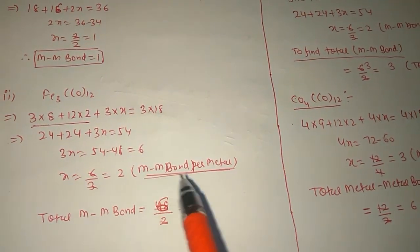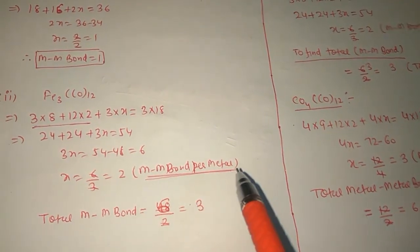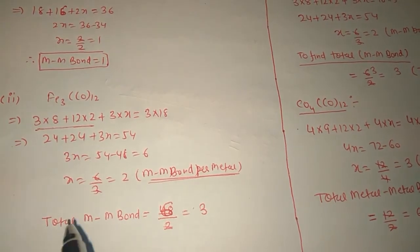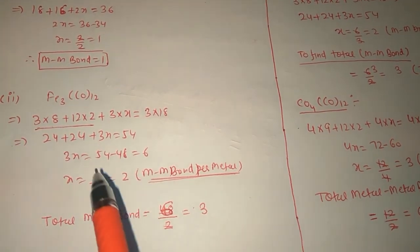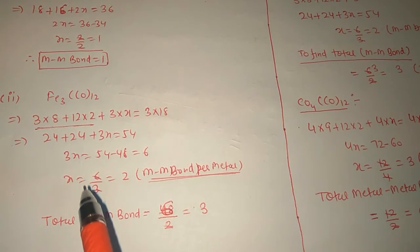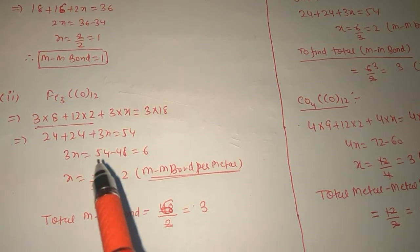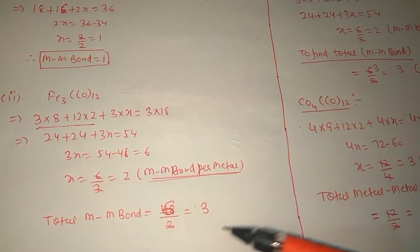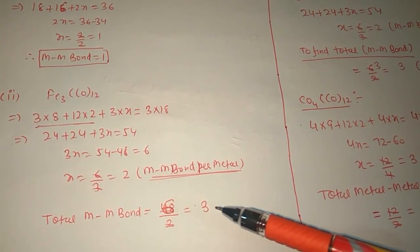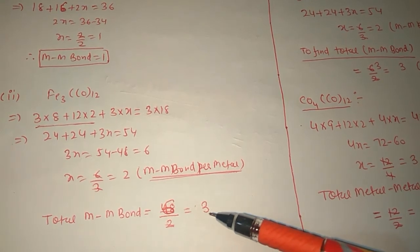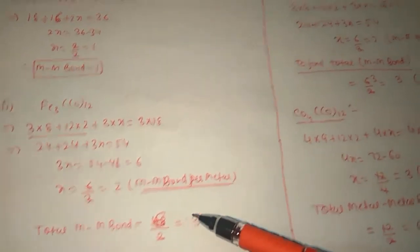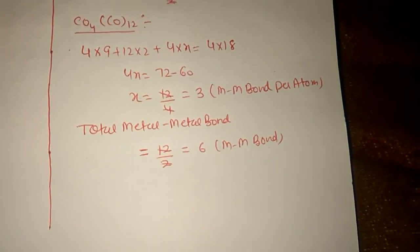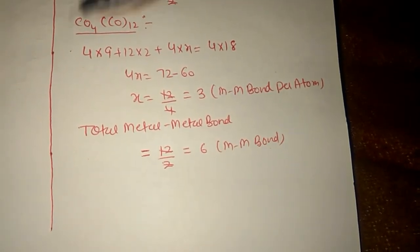To find the total number of metal-metal bonds from the per-atom value, we divide by 2. So for Fe₃(CO)₁₂, dividing 6 by 2 gives 3 — the total number of metal-metal bonds in this compound.